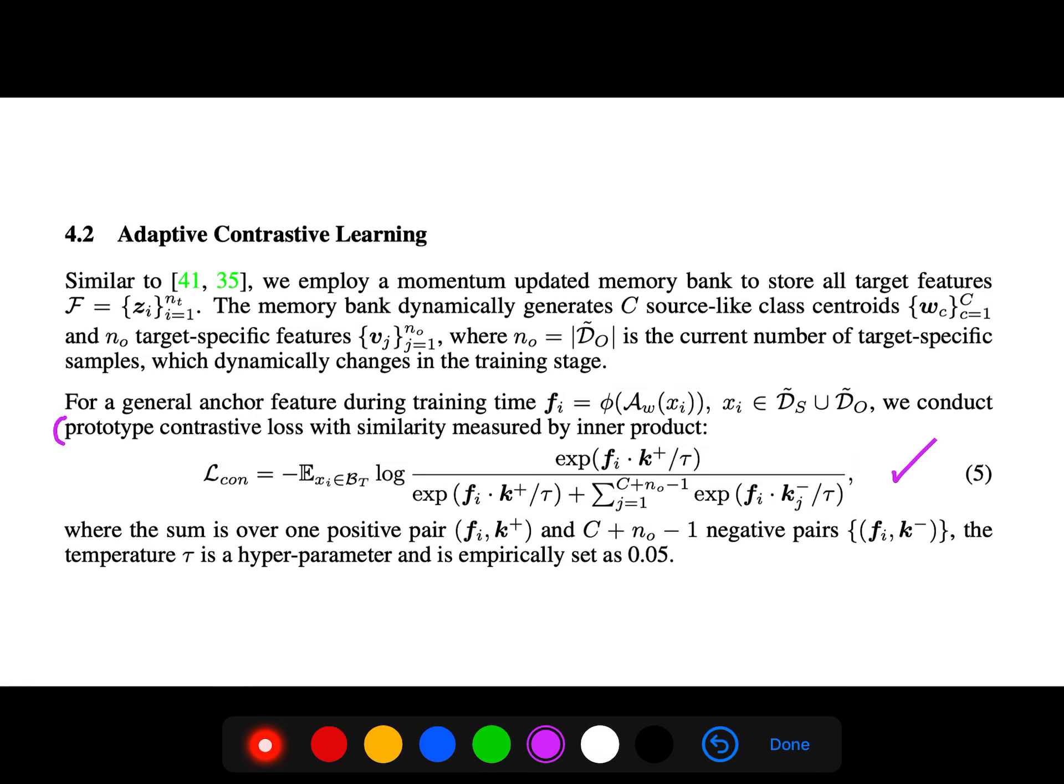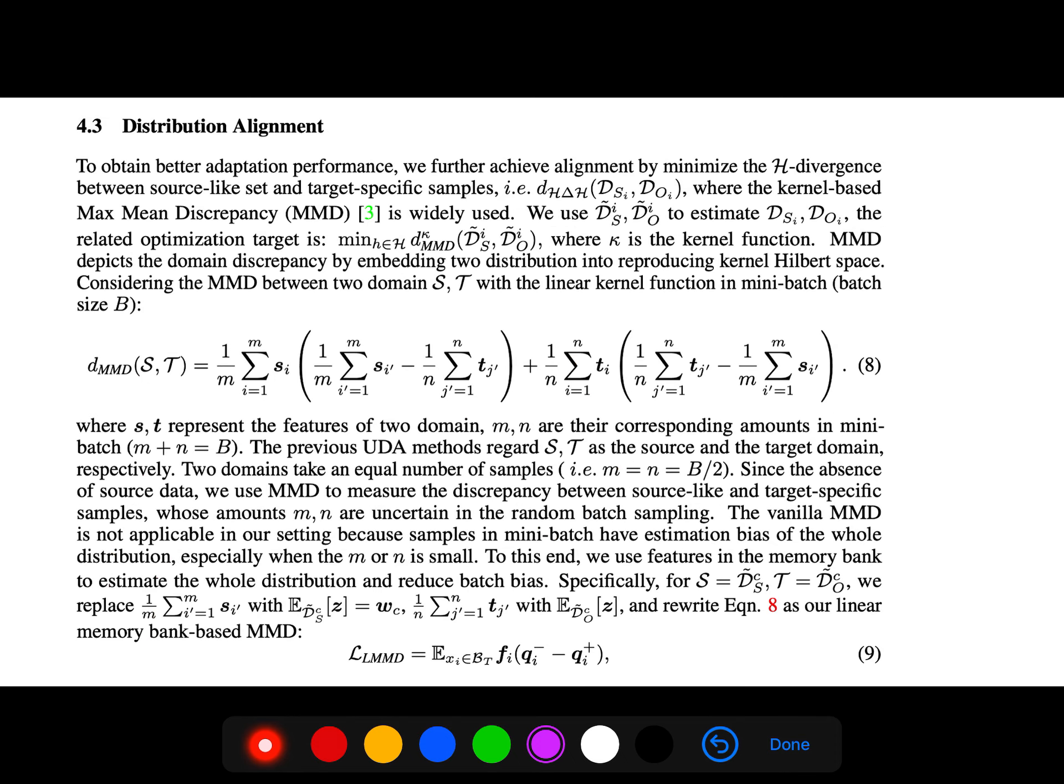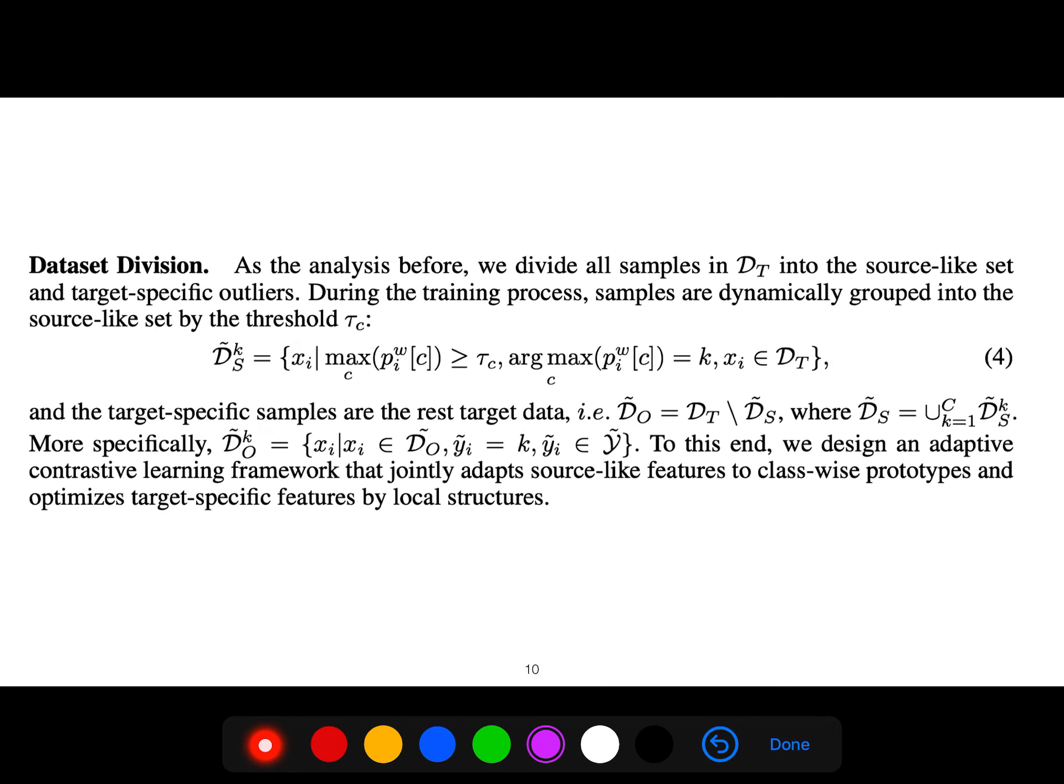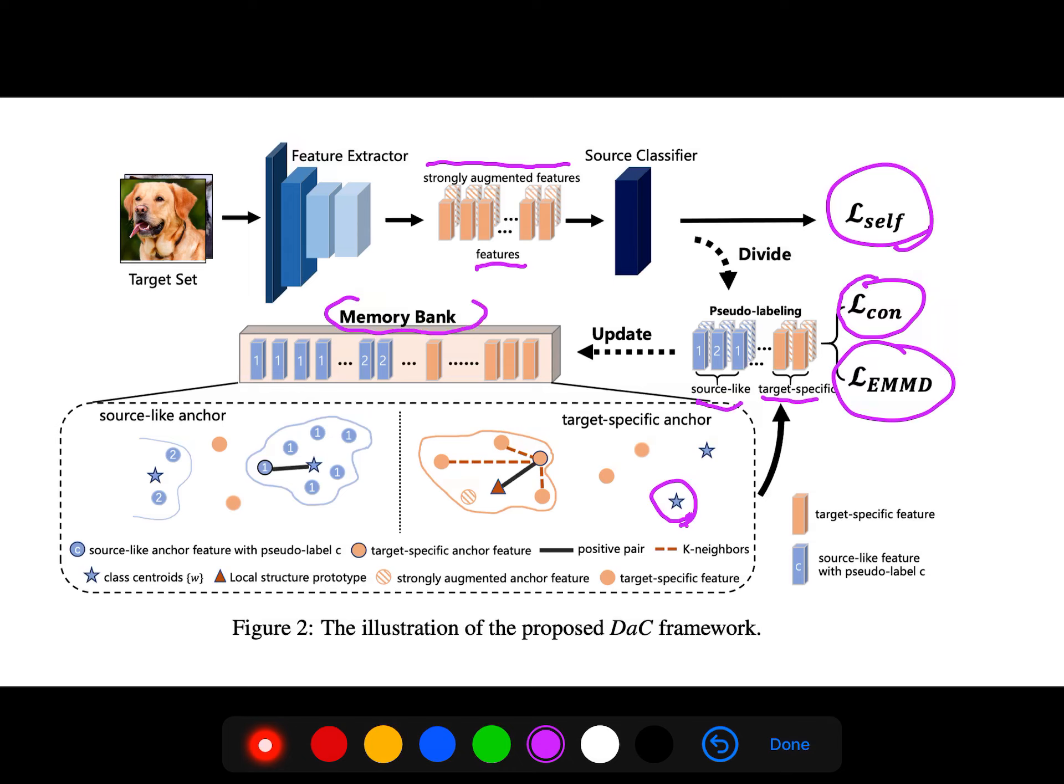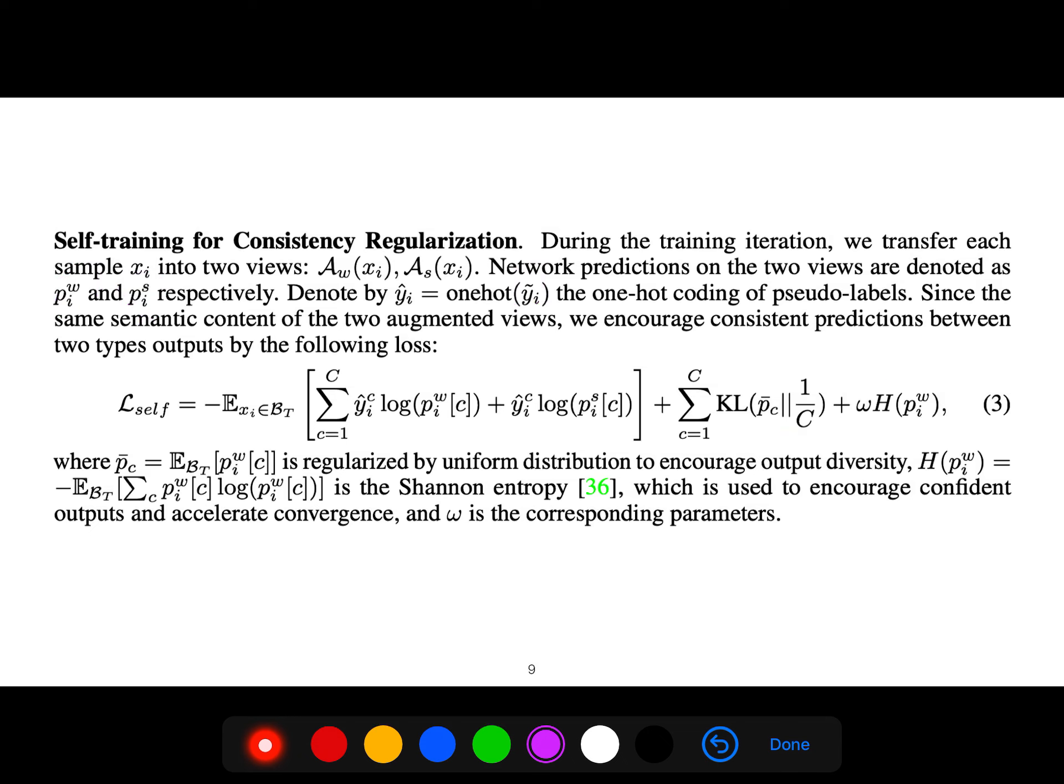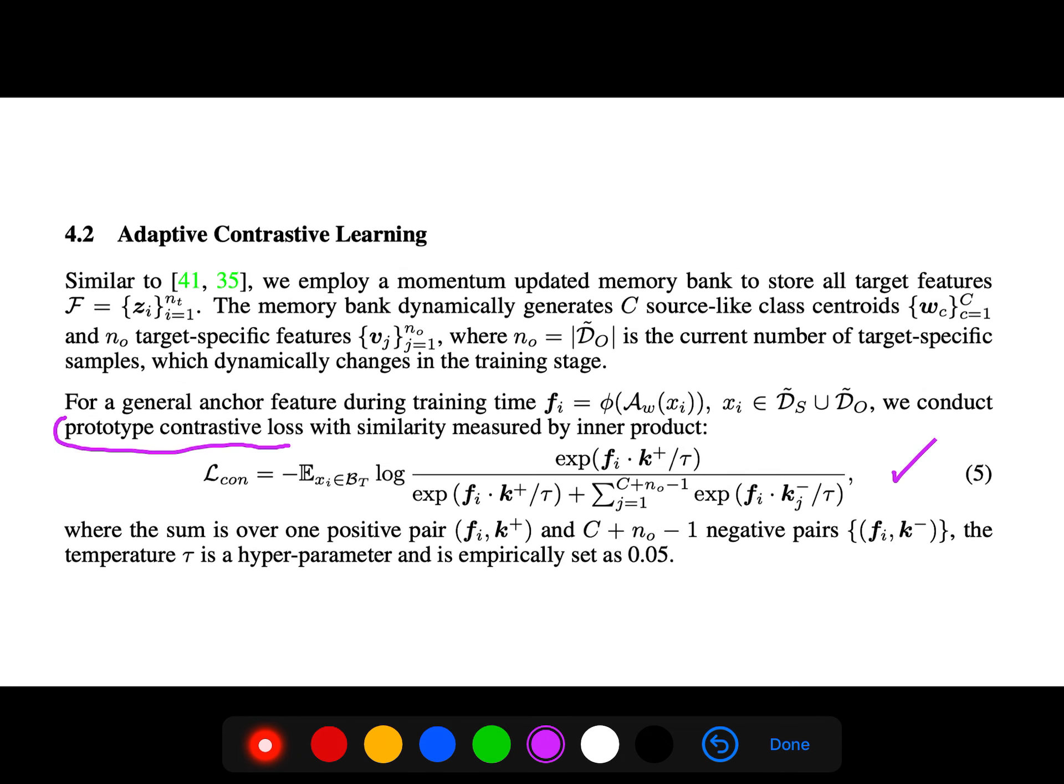We conduct prototype contrastive loss and employ a momentum-updated memory bank. This memory bank is needed for contrastive learning. The summation is over one positive pair and this amount of negative pairs, with a temperature hyperparameter, typically 0.05.